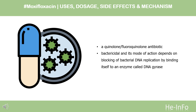Aerobic gram-negative microorganisms: Acinetobacter lwoffii, Haemophilus influenzae, and Haemophilus parainfluenzae. Other microorganisms: Chlamydia. Moxifloxacin is bactericidal and its mode of action depends on blocking bacterial DNA replication by binding itself to an enzyme called DNA gyrase, which allows the untwisting required to replicate one DNA double helix into two. Notably, the drug has 100 times higher affinity for bacterial DNA gyrase than for mammalian.